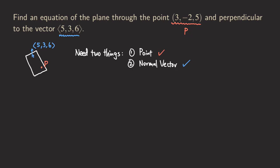So how do we write down the equation? We have the form of the equation: a(x - x₀) + b(y - y₀) + c(z - z₀) = 0.